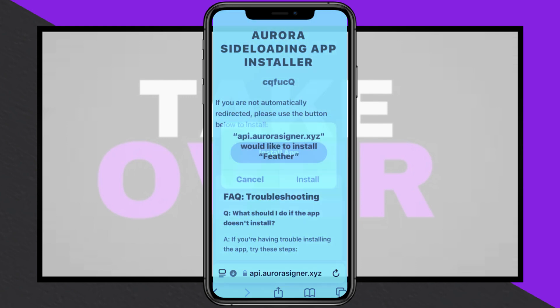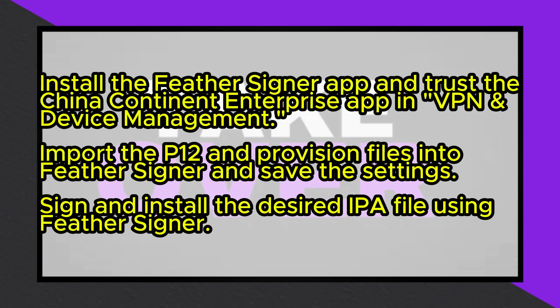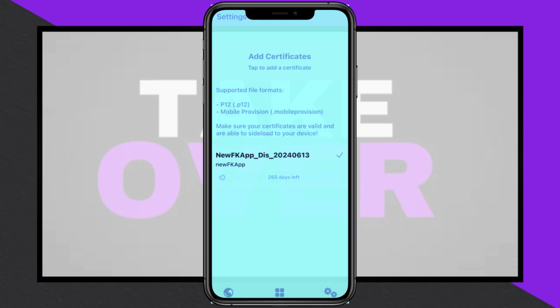Once signed, download and install the FeatherSignal app on your iPhone. Open Settings, go to General, and trust the China Continent Enterprise app under VPN & Device Management. Restart your device if required.